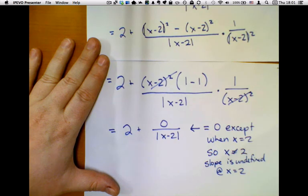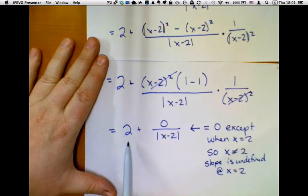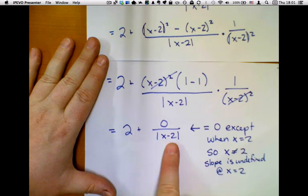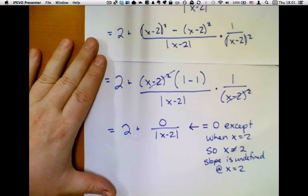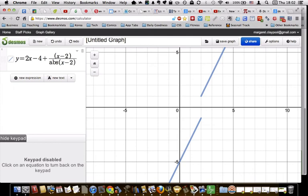So what it's saying is that the slope of this function is always equal to 2, except something weird happens right around x equals 2. Let's look at it on Desmos and see what the heck we're dealing with. So I entered the function, and here we have it. This is 2x minus 4 plus x minus 2 over the absolute value of x minus 2.